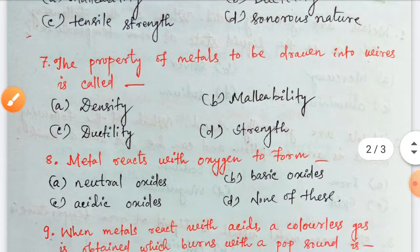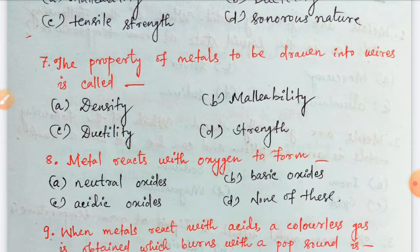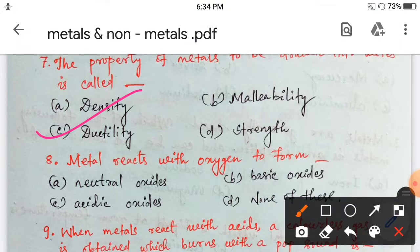Next question. The property of metals to be drawn into wire is called density, malleability, ductility, strength. It is called ductility. Option C.